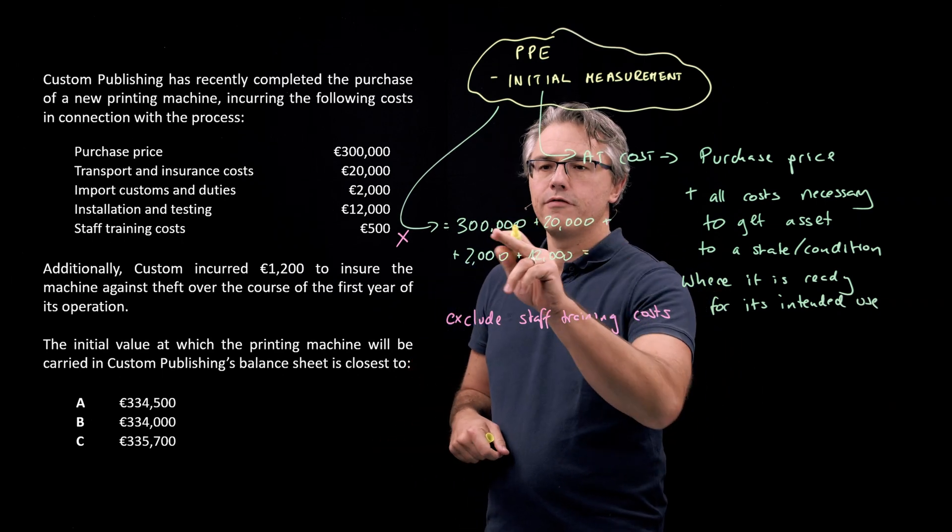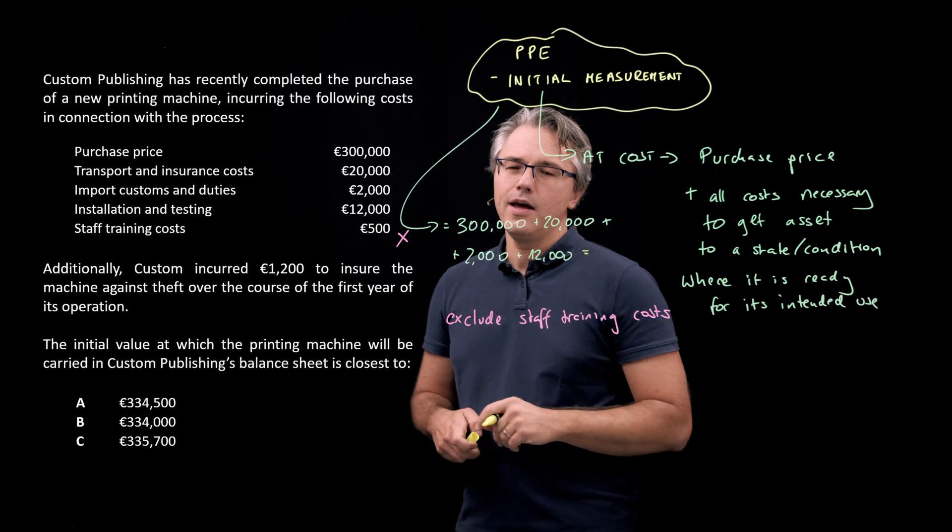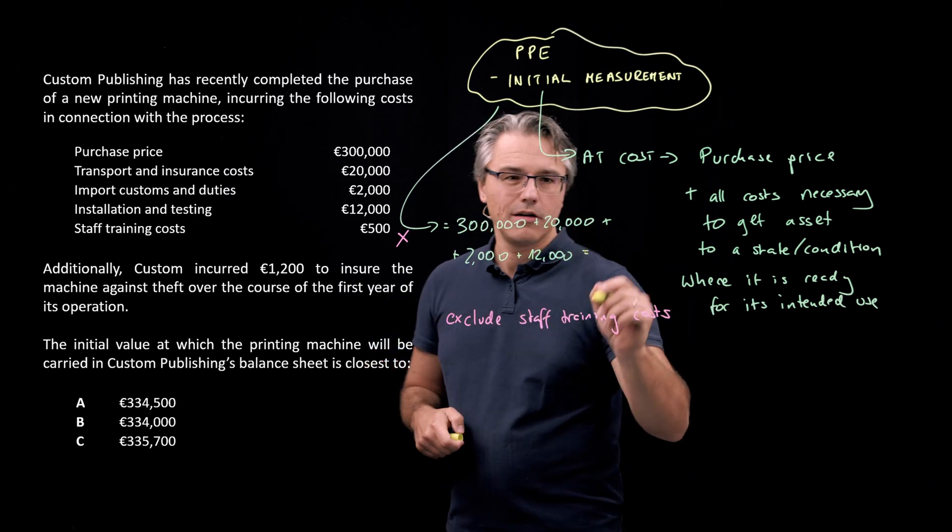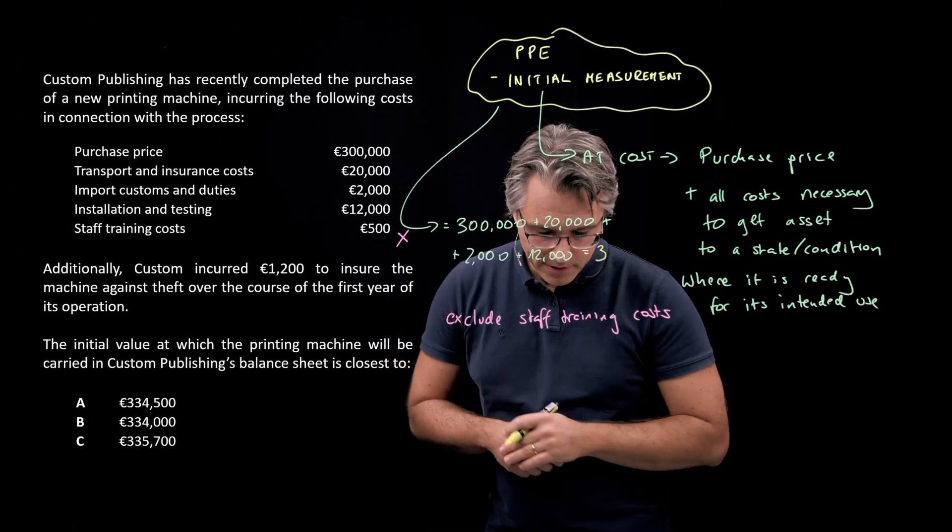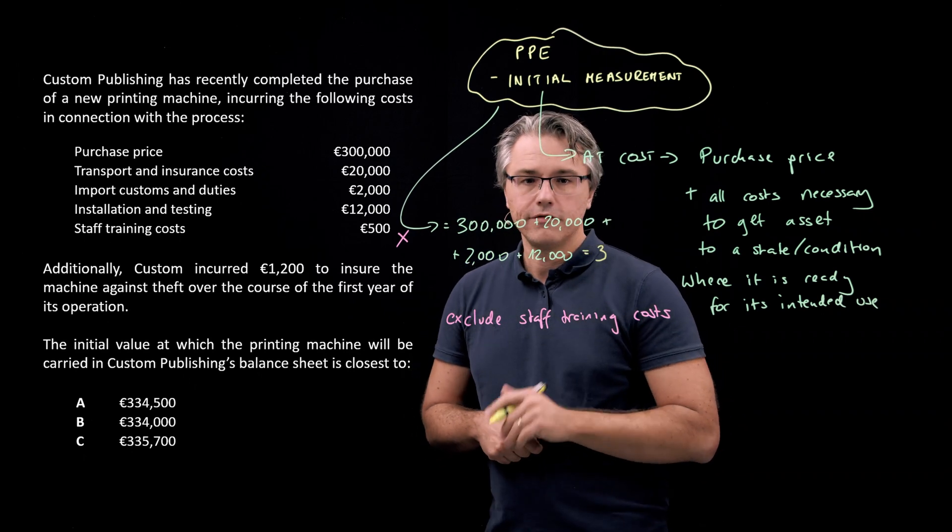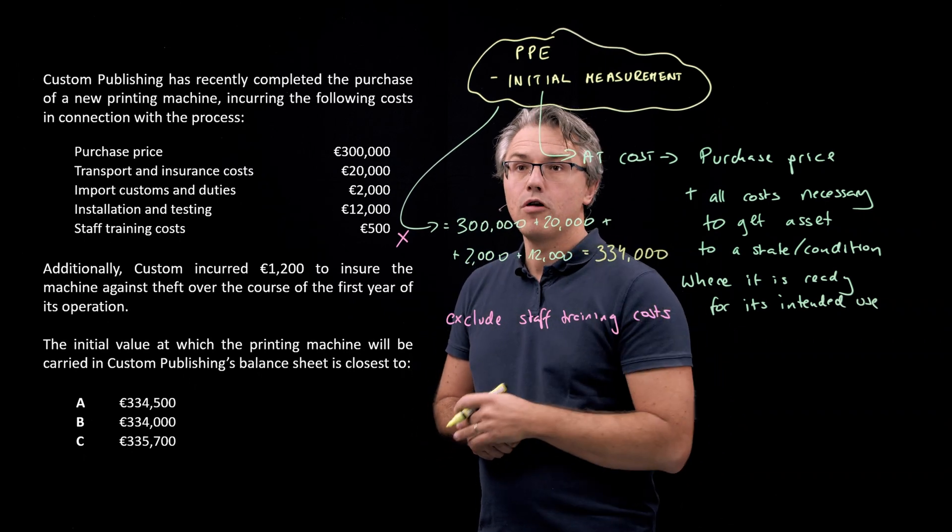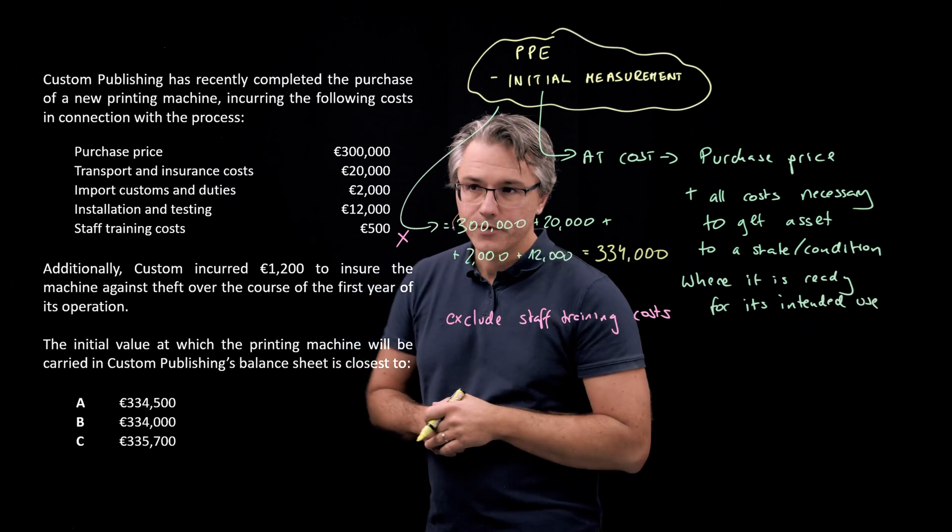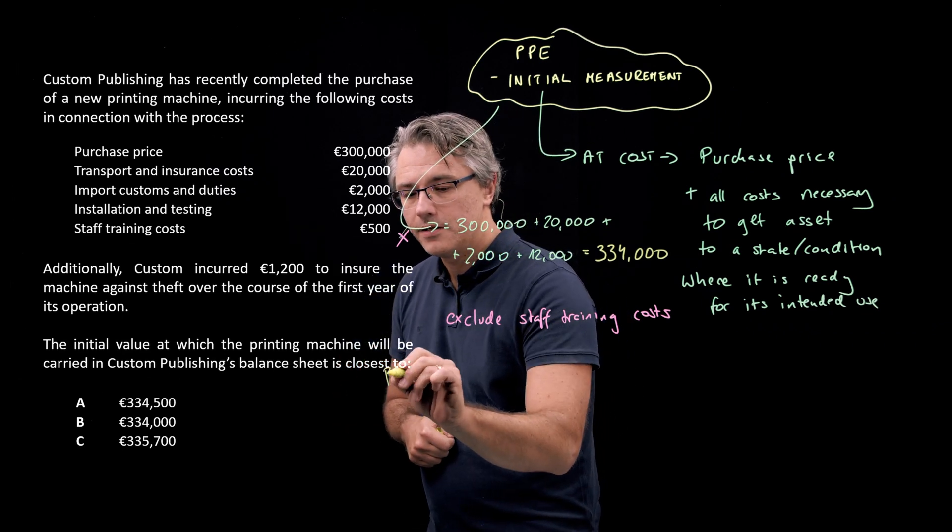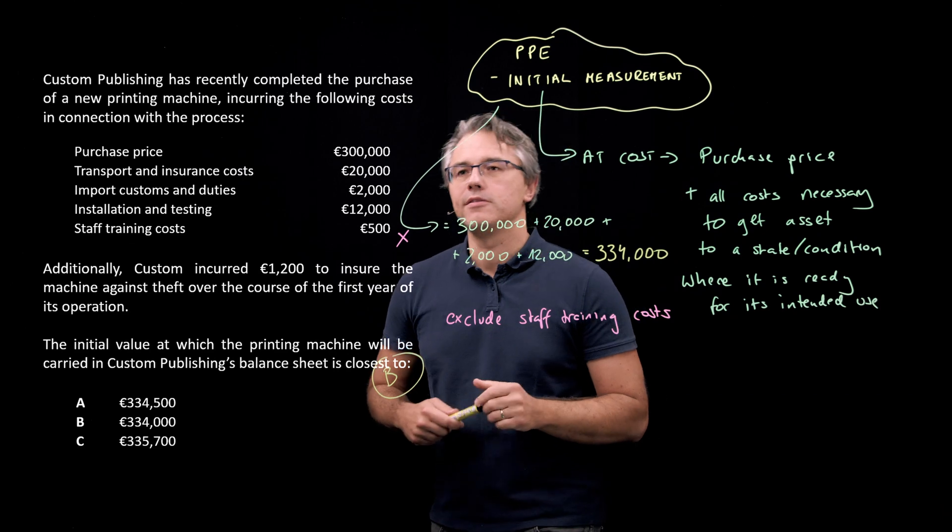What's the total? 322 and 2. That's going to give us a total of 334,000 euro of initial value. And that, as you can see down here, corresponds perfectly with answer B. So that's going to be our answer to the question.